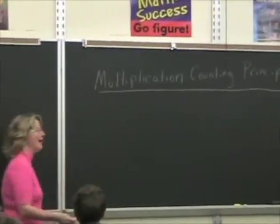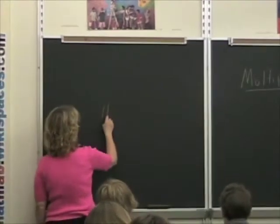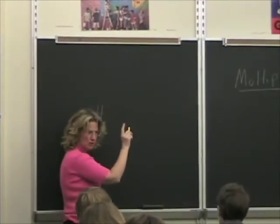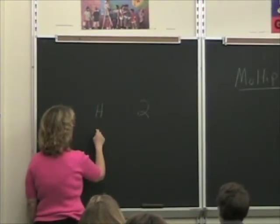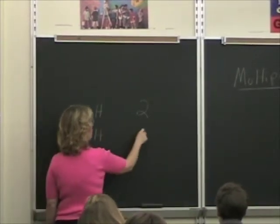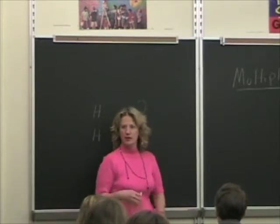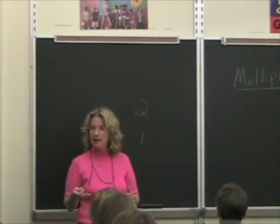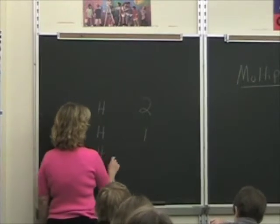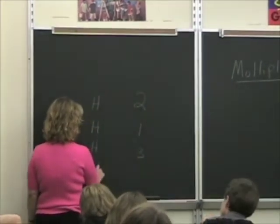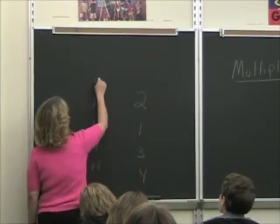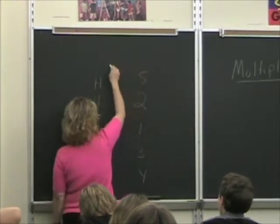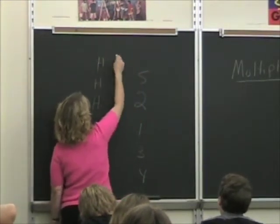So I had, the first time, I had a head and a two. And the second time, I had a head and a one. So there's a whole bunch of other things that could have happened though, right? I could have had a head and a six. Is that everything that could have happened? No.